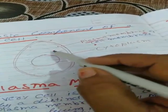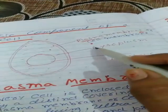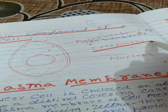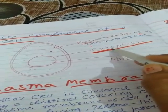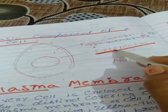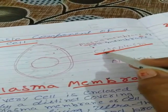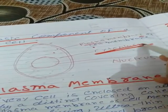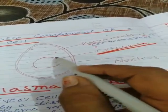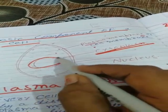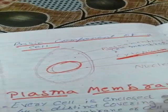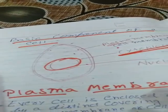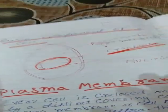Inside this membrane, a fluid-like structure is present, called cytoplasm — 'cyto' means fluid. A round and very important structure is also present, called the nucleus. So these three — cell membrane, cytoplasm, and nucleus — are the basic components of the cell.